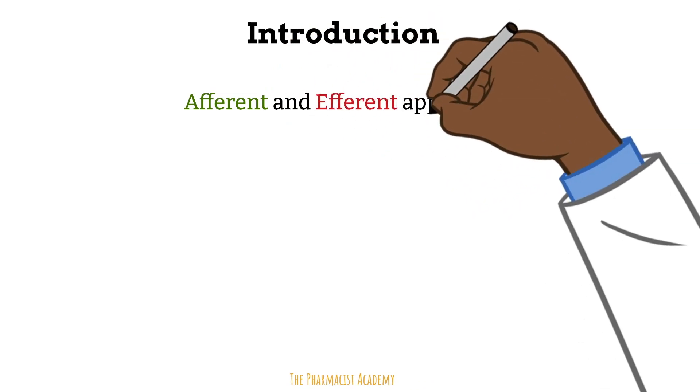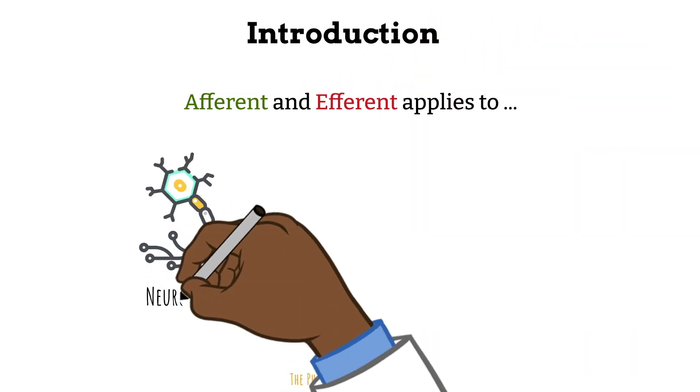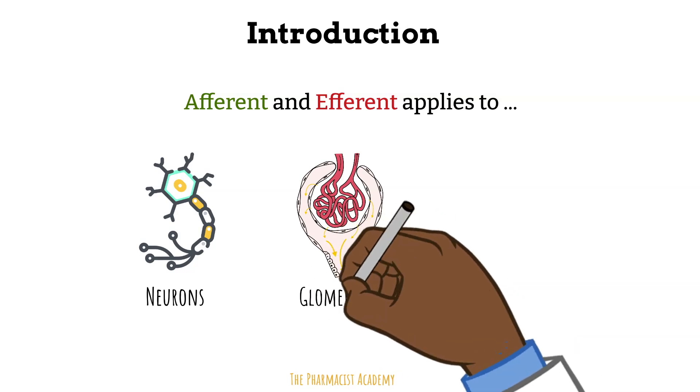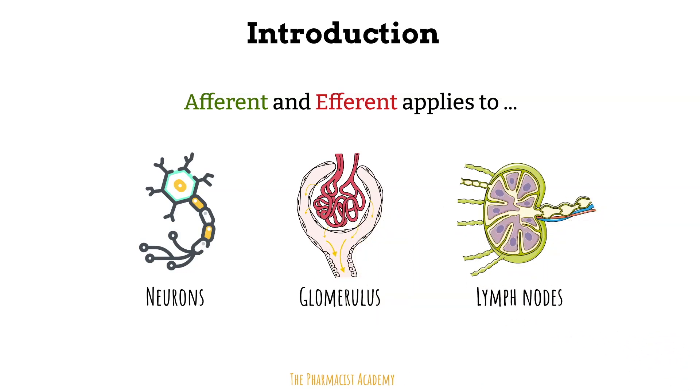We use the term afferent and efferent when we are talking about these three things in the body: the neurons, the glomerulus in the kidney, and the lymph nodes of the lymphatic system.